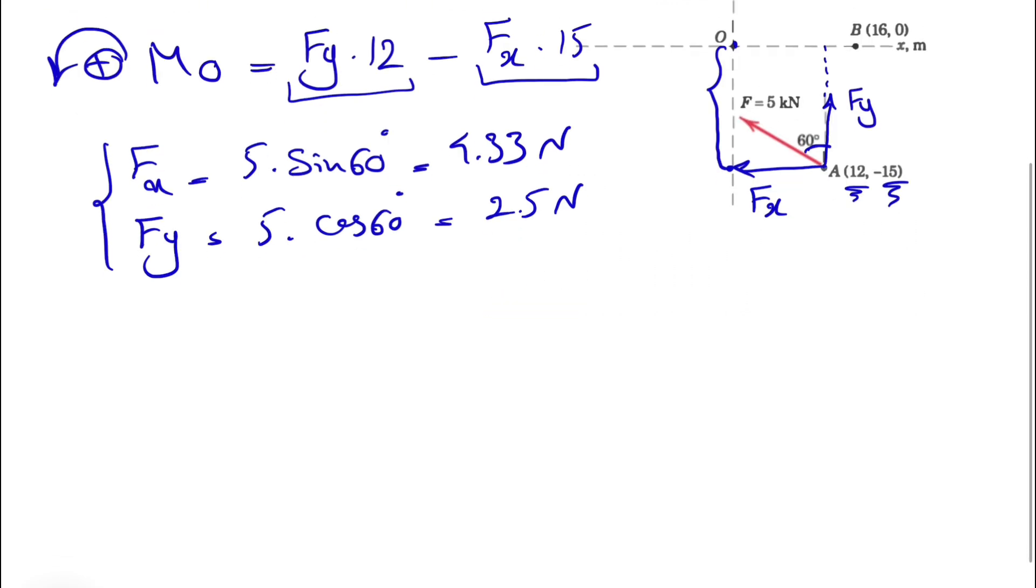Now we can find the moment very easily. We have FY, which was 2.5 times 12, minus 4.33 times 15. This is going to give us 30 minus 64.95. This negative sign shows that we are not counterclockwise, so the moment would be clockwise. That's the moment about point O.